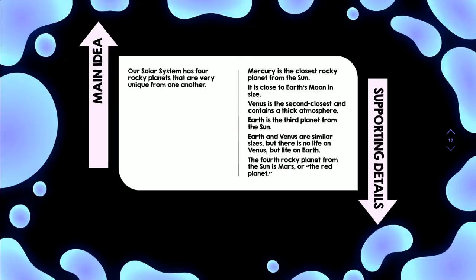The second supporting detail: it is close to Earth's moon in size. So, we're still describing the rocky planets from the sun. Venus is the second closest and contains a thick atmosphere. Earth is the third planet from the sun. Earth and Venus are similar in sizes, but there is no life on Venus. There's another supporting detail. The fourth rocky planet from the sun is Mars, or the red planet. So, the main idea was provided to inform us that there are four rocky planets that are very unique from one another, and then the author provided many different supporting details to justify or back up that main idea.